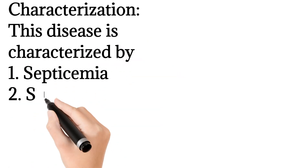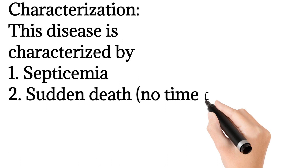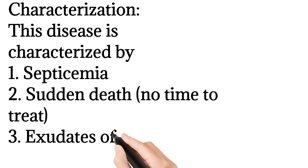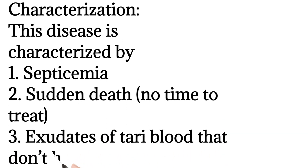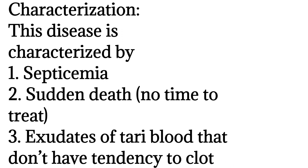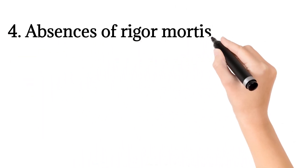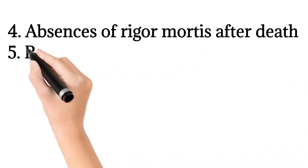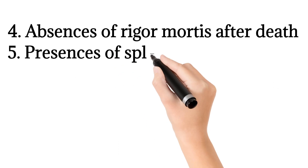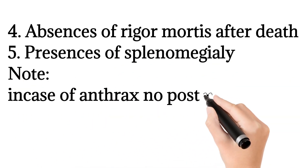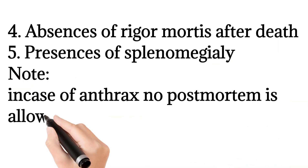This disease is characterized by: 1. Septicemia. 2. Sudden death — no time to treat. 3. Exudates of tarry blood that don't have a tendency to clot. 4. Absence of rigor mortis after death. 5. Presence of splenomegaly. Note: in cases of anthrax, no post-mortem is allowed.